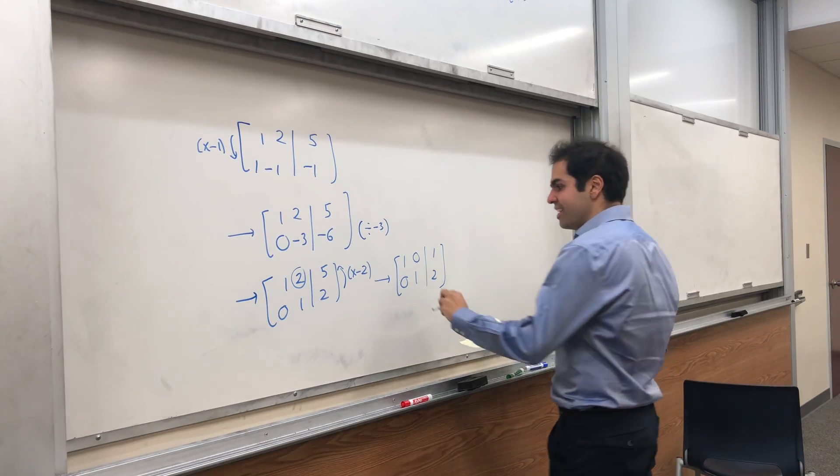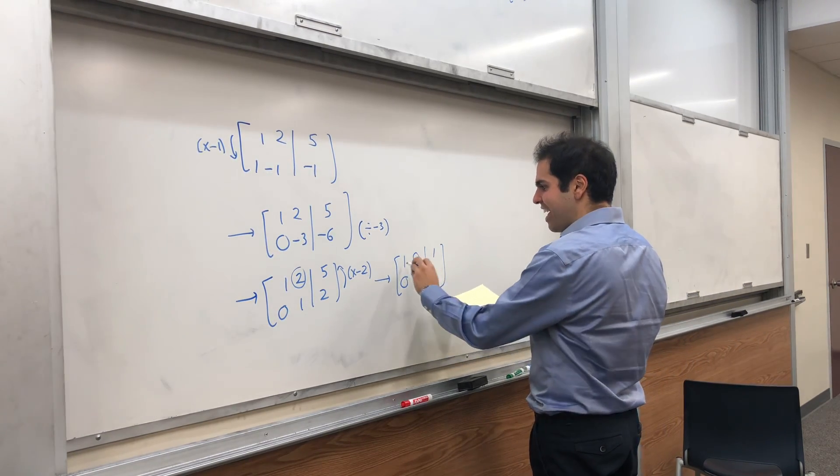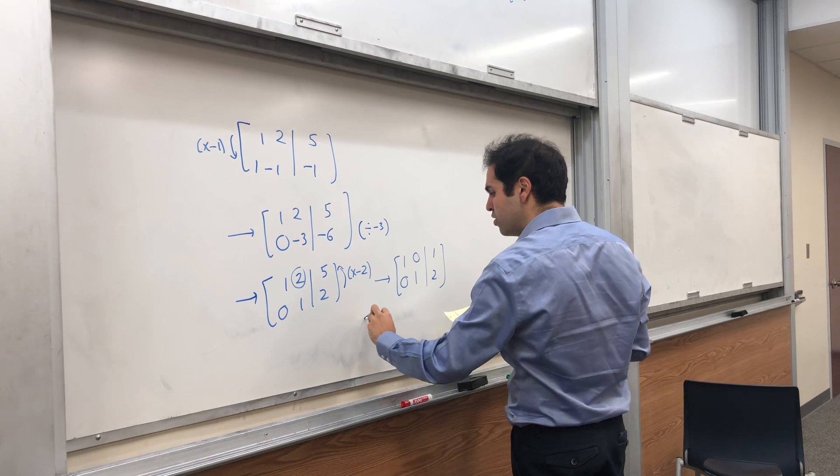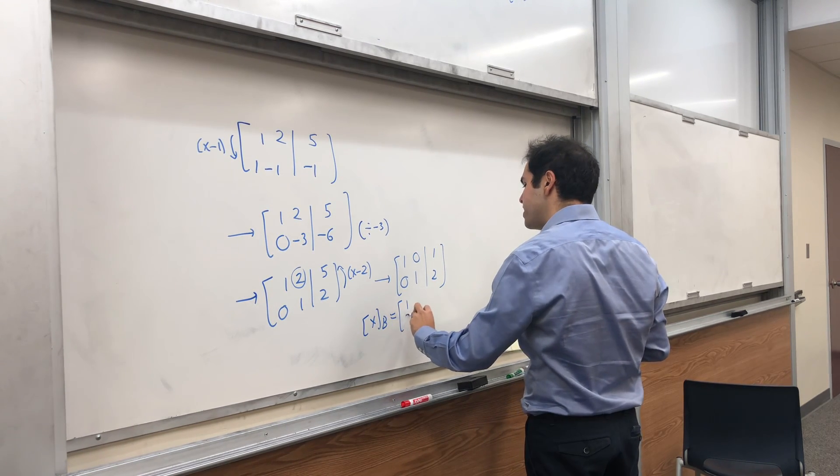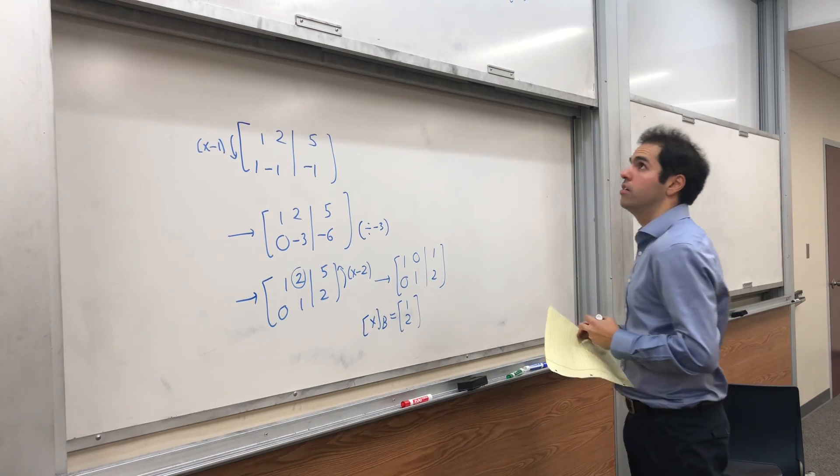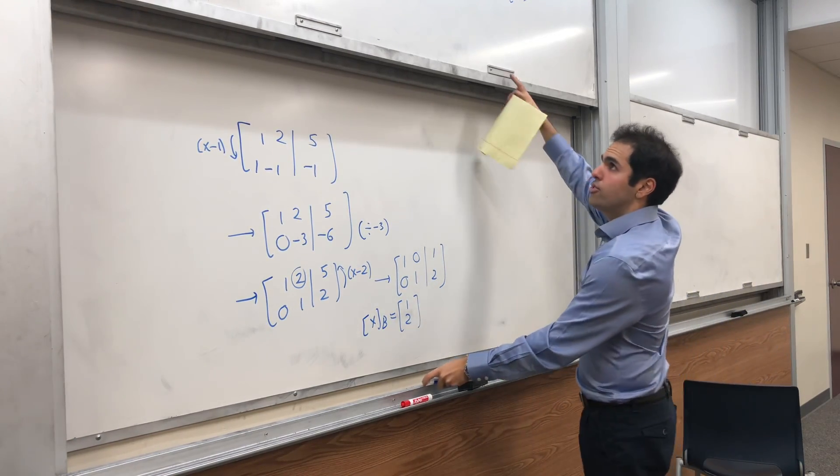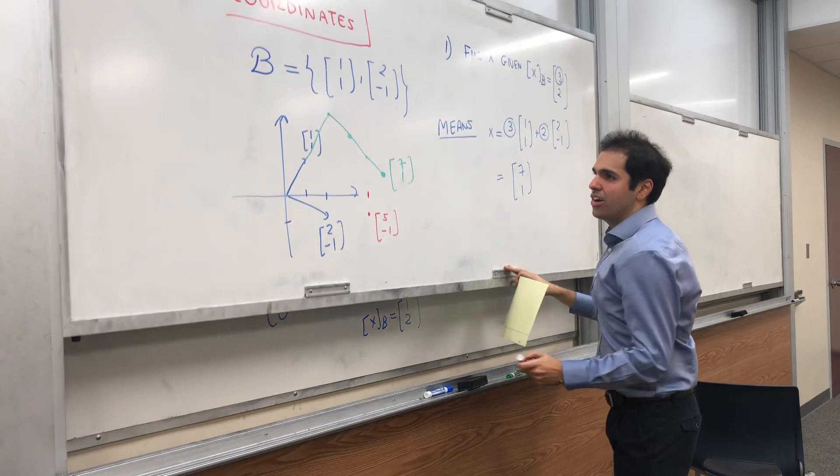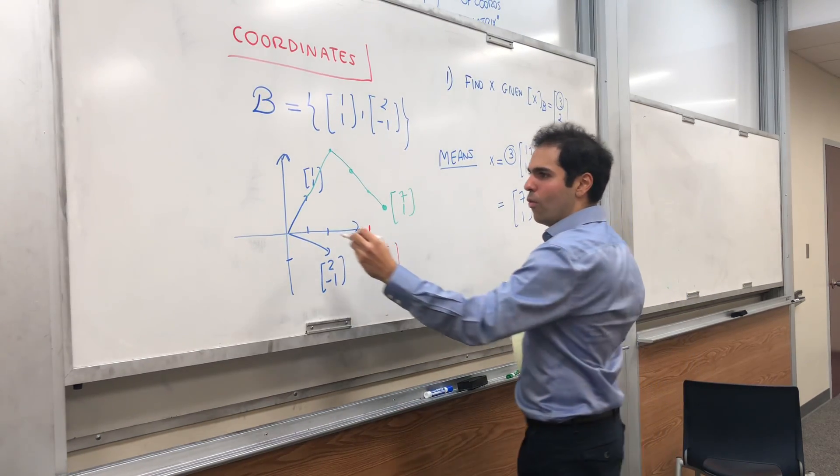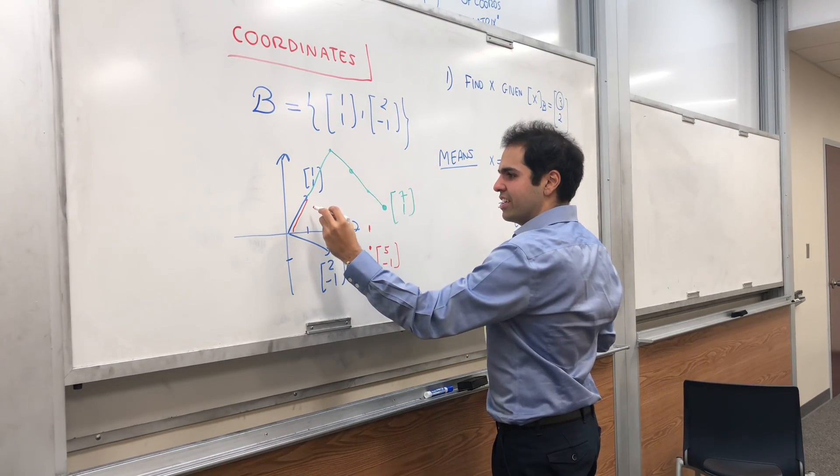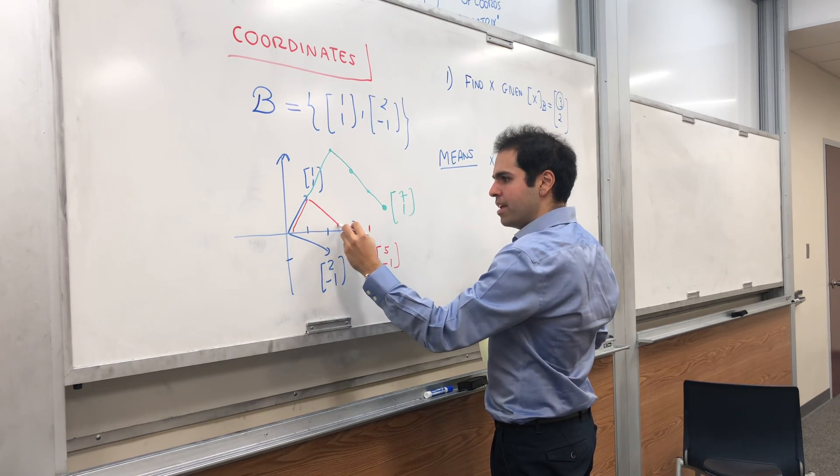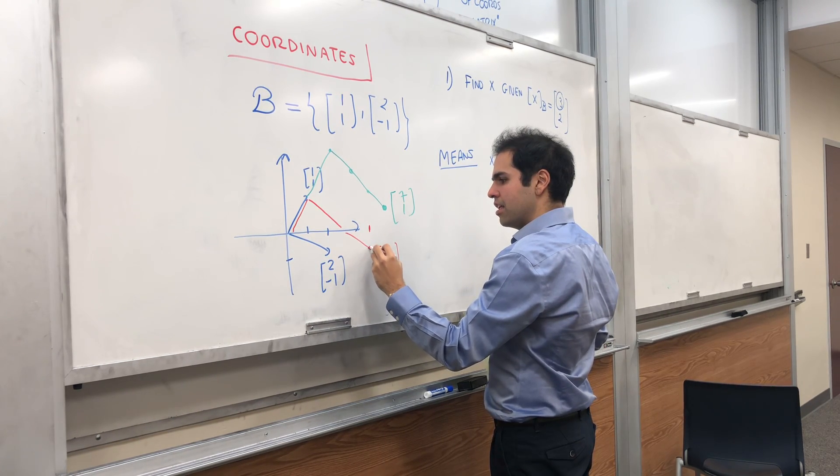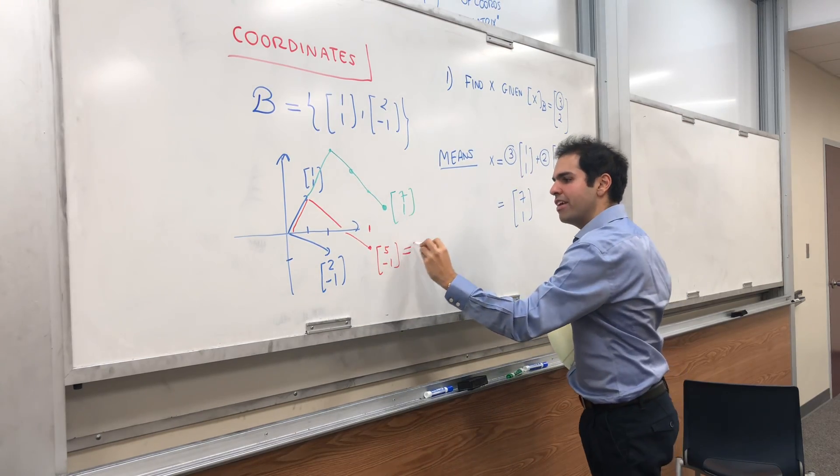So indeed, what we wanted to find is that a is 1 and b is 2. So your coordinates of x with respect to B are (1,2). And let's just verify this visually. So if you go one step in this direction and then two steps in this direction, so it may look something like that, then indeed you get our vector x.